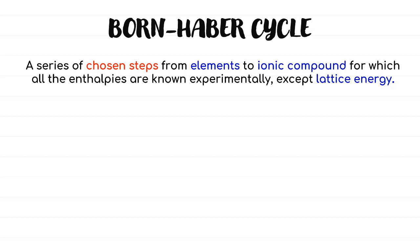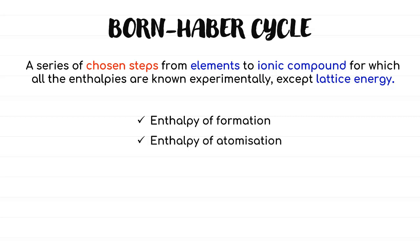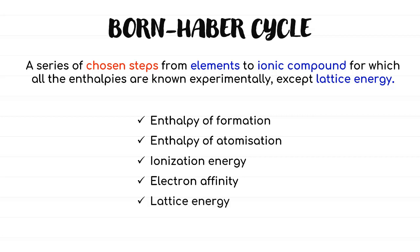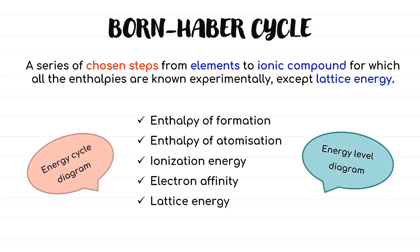Please memorize all the definitions of enthalpy to help you form correct thermochemical equations. There are 5 enthalpies involved in this cycle: enthalpy of formations, enthalpy of atomizations, ionization energy, electron affinity, and lattice energy. Please keep the order of enthalpies as shown on the slides when answering Born-Haber Cycle. There are 2 representations of the Born-Haber Cycle: one is the energy cycle diagram, and the second is the energy level diagram.